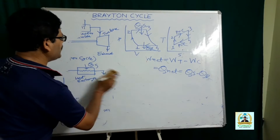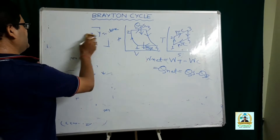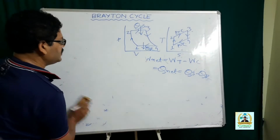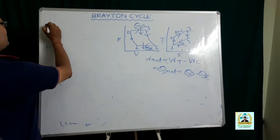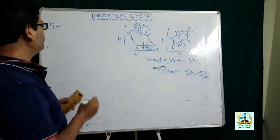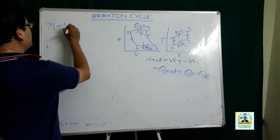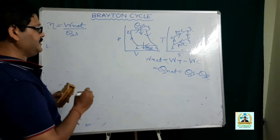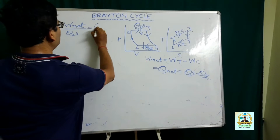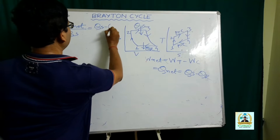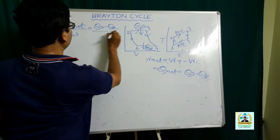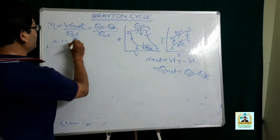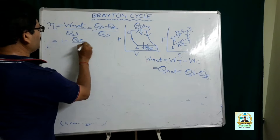We can find out the efficiency of the cycle from first principles. The efficiency of any cycle is the net work divided by heat supplied, which equals heat supplied minus heat ejected divided by heat supplied, that is equal to 1 minus Q_rejected divided by Q_supplied.